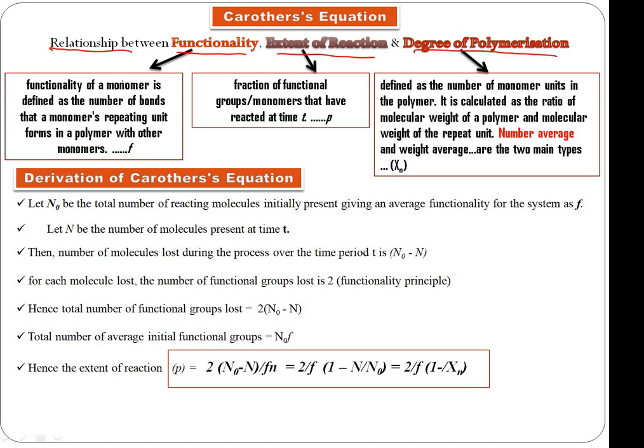Number one: functionality. Functionality of a monomer is defined as the number of bonds that a monomer's repeating unit forms in a polymer with other monomers. It is denoted by f. For example, if we have radicals, they have two active sites, so we can check the functionality.